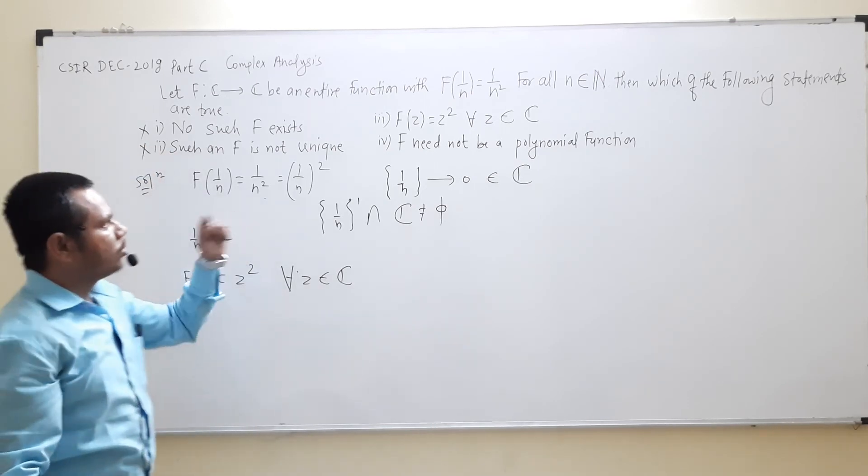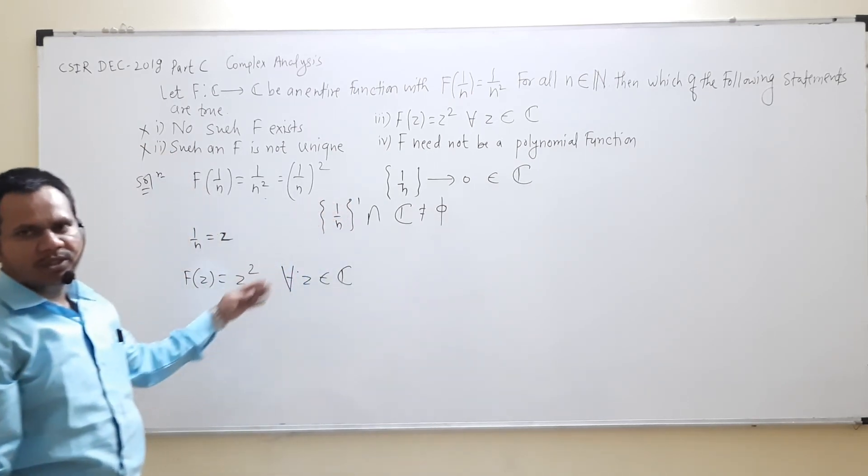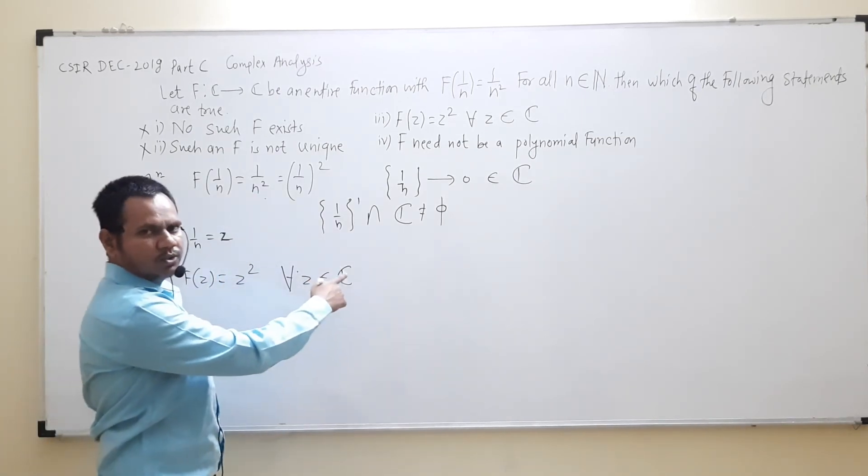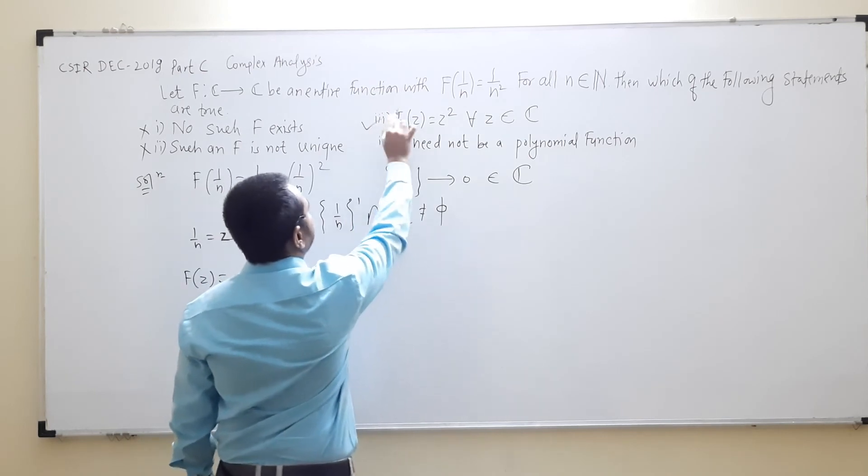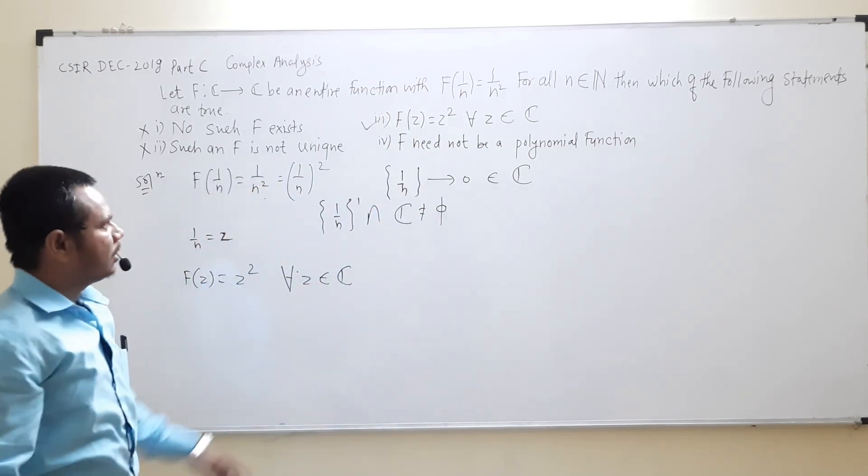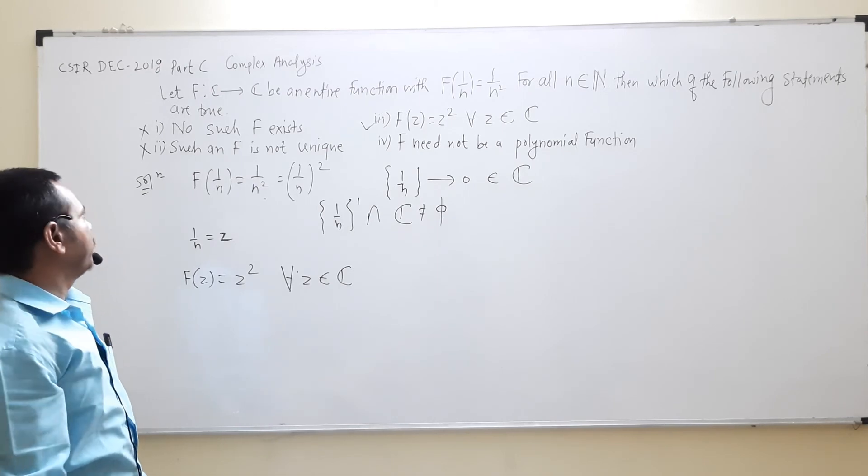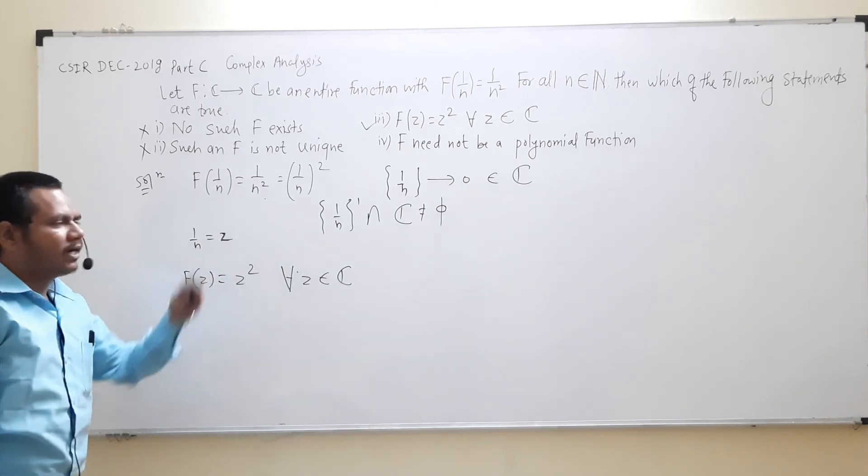Now the third option: f(z) equal to z². This is what we are getting, f(z) equal to z² for all z belongs to C. That's why this option is correct.